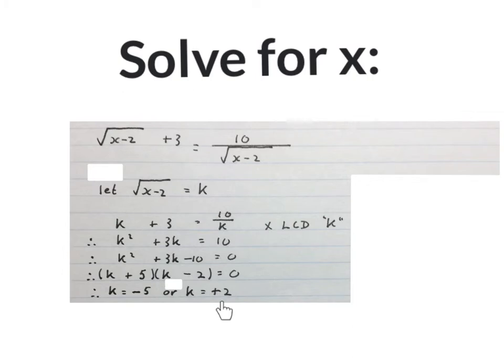Then you get these two values for K. K is equal to minus 5, or K is equal to 2. Now we go back to this step, because this is K, so this is this.